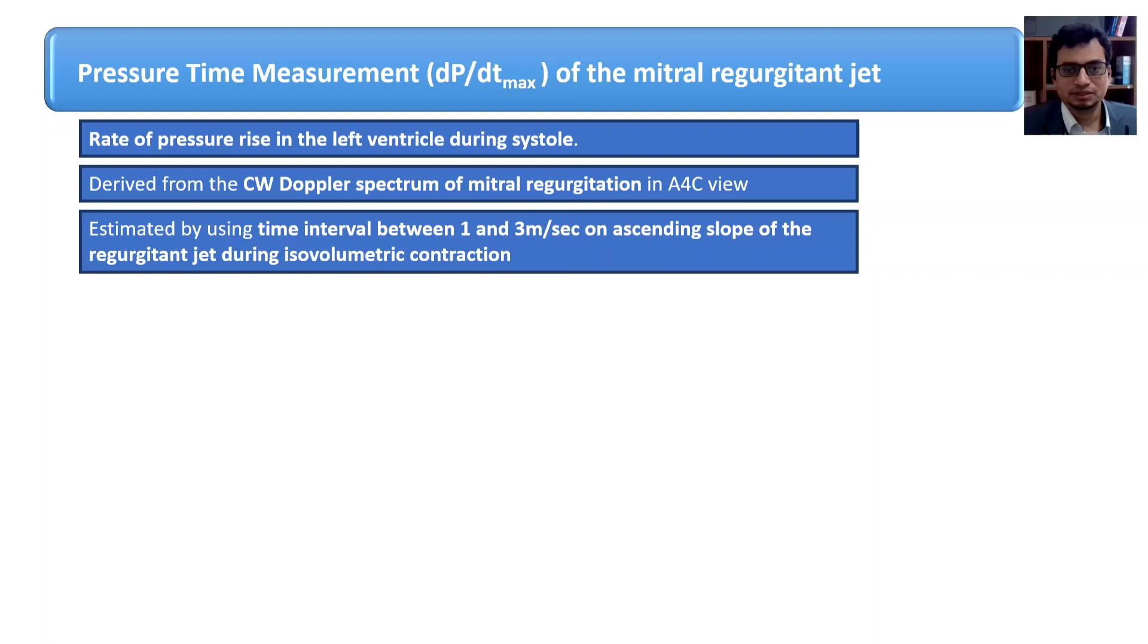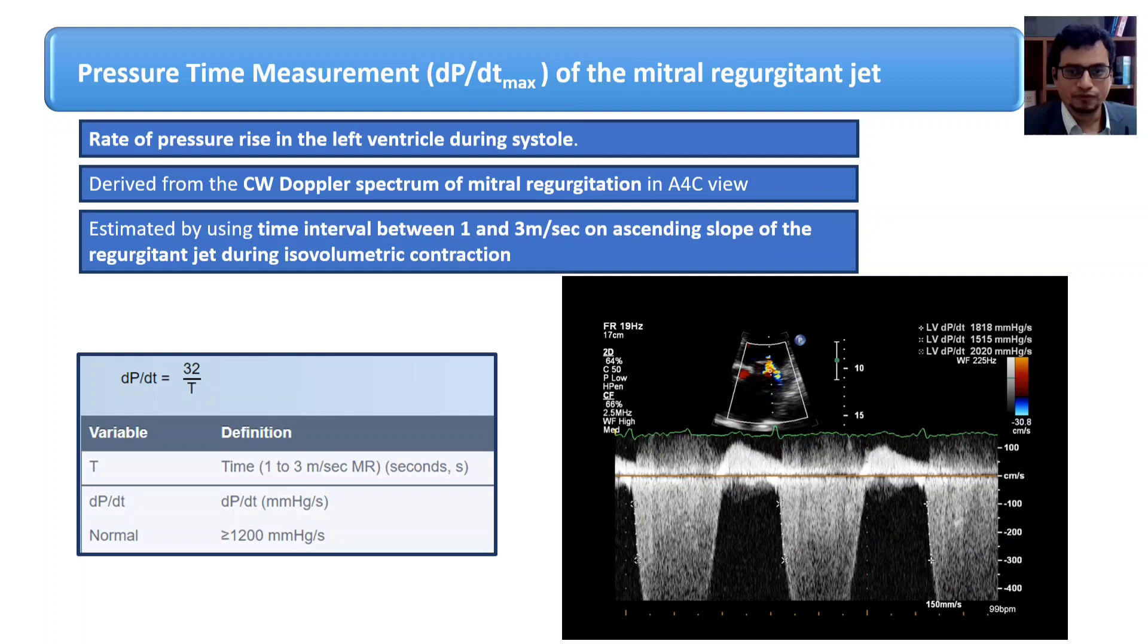Then we measure the time interval between these two velocities and put in the formula: DP over DT is equal to 32 upon time which will give you the value of DP over DT which is normally about 1200 millimeter of mercury per second.